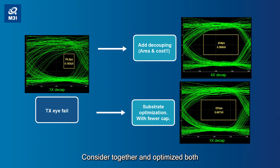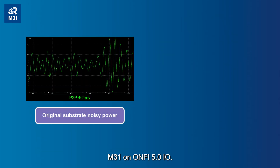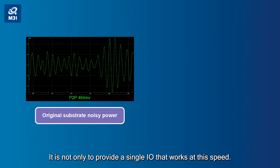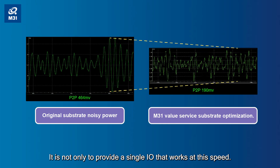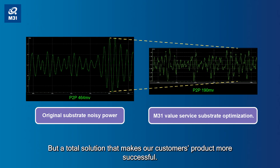M31's ONV 5.0 I/O is not only providing a single I/O that works at this speed, but a total solution that makes our customers' products more successful.